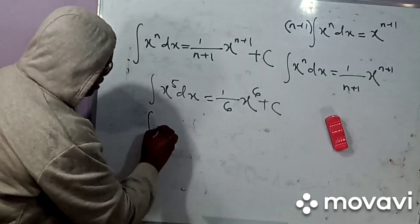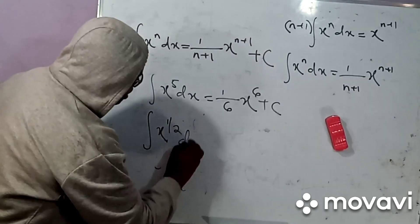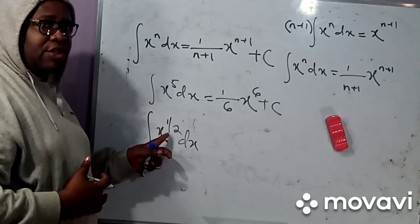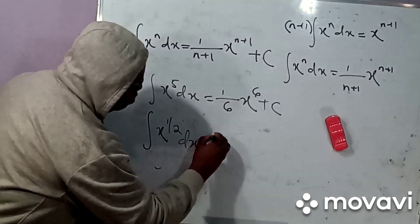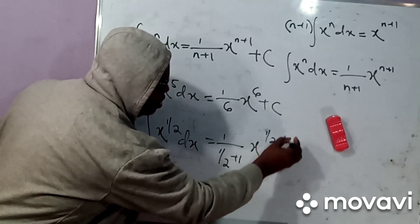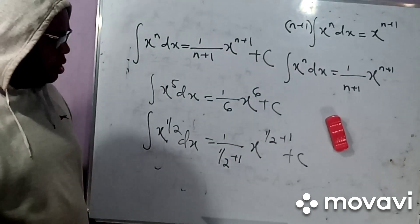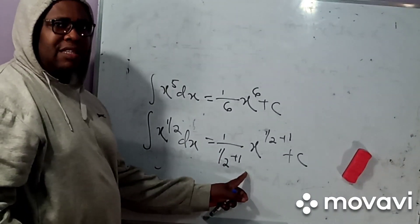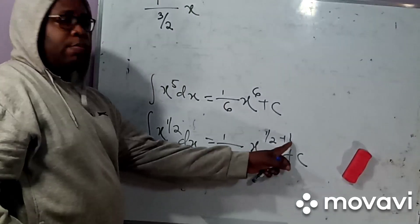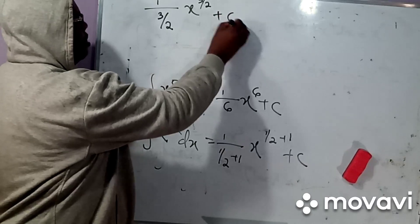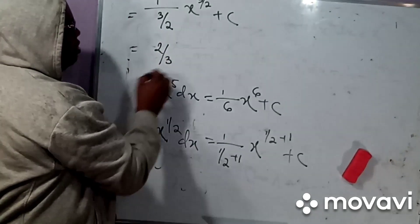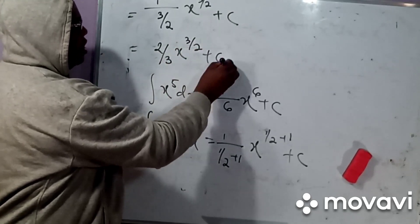What if we were asked to evaluate the integral of X to the power 1 over 2? This is just like finding the integral of the square root of X, since the square root of X is simply X to the power 1 over 2. This is going to be equal to 1 over (1/2 plus 1), times X to the power 1/2 plus 1, plus a constant of integration. Now 1/2 plus 1 is 3/2, so I have 1 divided by 3/2, then X to the power 3/2, plus a constant. The reciprocal of 3/2 is 2/3, giving us 2/3 times X to the power 3/2, plus a constant of integration.